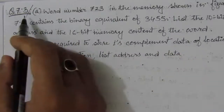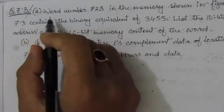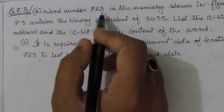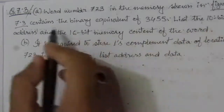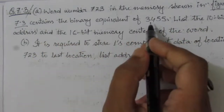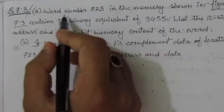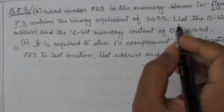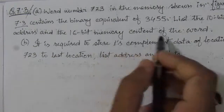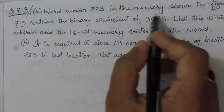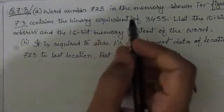Let us solve problem number 7.3 in this video. This problem is from chapter number 7. The problem states that word number 723 in the memory shown in figure 7.3 contains the binary equivalent of 3455 — this number is given in decimal. We have to list the 10-bit address and the 16-bit memory content of the word. This number is the content or data, and 723 is the address, as shown in figure 7.3.